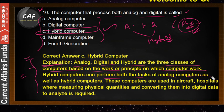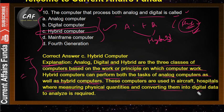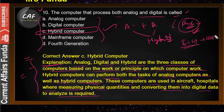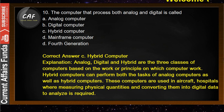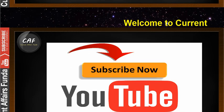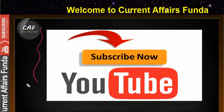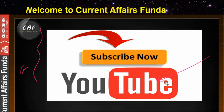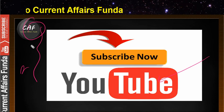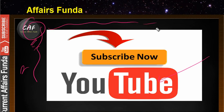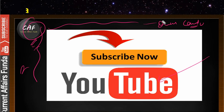Hybrid computers can perform the tasks of both analog and digital computers. They are used in aircraft and hospitals where measuring physical quantities and converting them into digital data is required — for example, ECG machines in hospitals. Keep writing down this explanation. Subscribe to the channel, spread the word about Current Affairs Funda among your friends, and if you have any queries, do comment — our team will definitely reply. Thanks for watching, have a nice day.